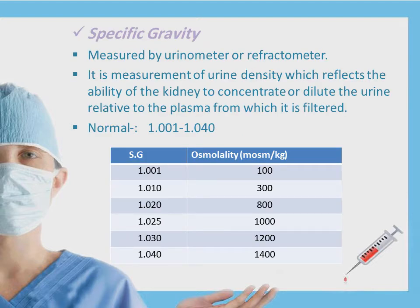Measurement of specific gravity is done using a urinometer or refractometer. We measure the urine density, which reflects the ability of the kidney to concentrate or dilute the urine relative to the plasma from which it is filtered. It is usually between 1.001 to 1.040. If the specific gravity is 1.001, then the osmolality is 100; if it is 1.040, then the osmolality is 1,400. So the normal osmolality is between 100 to 1,400 milliosmol per kilogram.